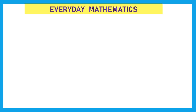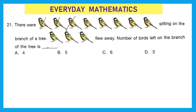Now we move to everyday mathematics. Question 21: There were 8 birds sitting on the branch of a tree and 3 birds flew away. The number of birds left is found by taking away 3 from 8: counting the remaining birds gives us 5. So 5 birds are left on the branch. The correct option is B.